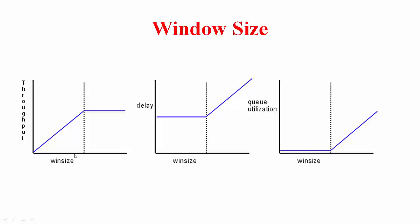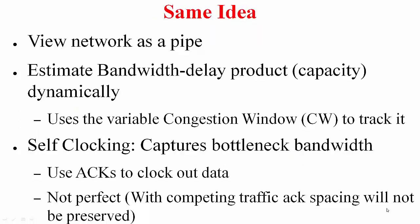As long as W is less than the bandwidth-delay product, throughput is dictated by W — the link is idle some of the time. Maximum throughput is achieved at W equal to the bandwidth-delay product. Beyond that, throughput levels off at the bottleneck bandwidth. Increasing W further only causes delays to grow progressively and queues to build up. Congestion control aims to operate in the range where throughput is maximized without congesting the network. Estimating the bandwidth-delay product is the crux of congestion control.